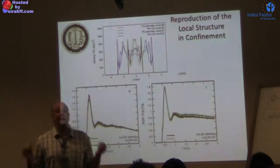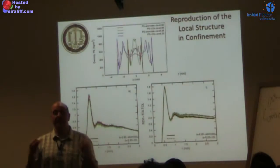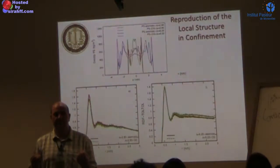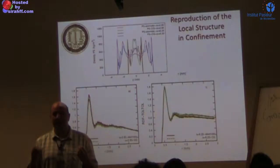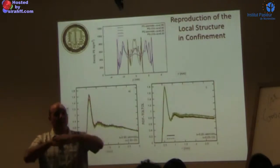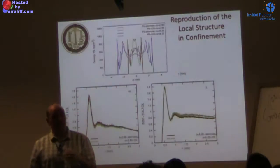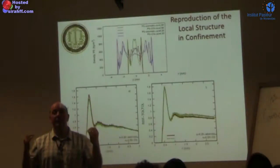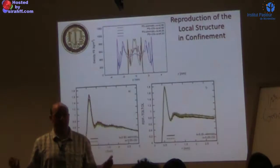Why does confinement work worse than a mixture? Because at the surface and in the bulk of the pore, you are effectively in two different state points. You have a different neighborhood at the surface versus the center — you don't have a homogeneous environment. Therefore the system is effectively in more than one state point simultaneously, and the whole concept of IBI — which assumes a homogeneous state point — has to fail.